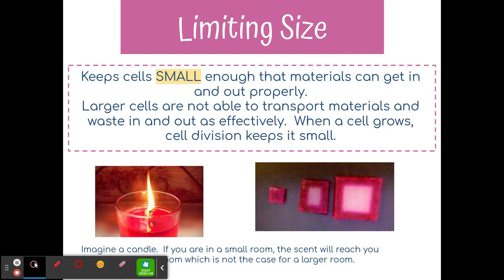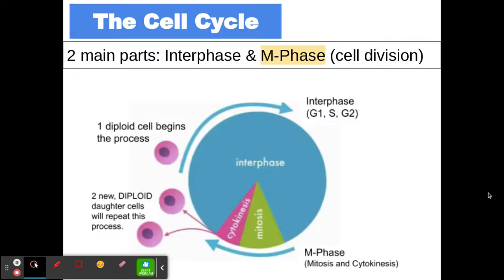So the four reasons are: repair and replace, reproduce, limit size, and growth and development. The cell cycle is really important. It's the life cycle of a cell, and it has two main parts: interphase and what we call the M phase.